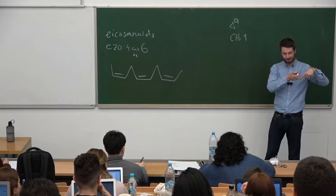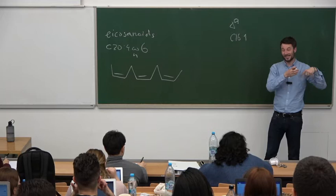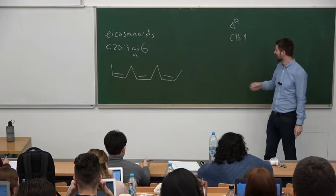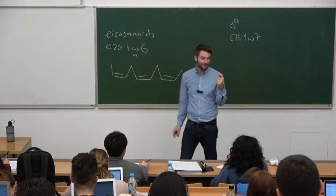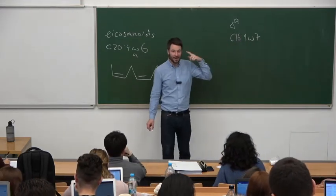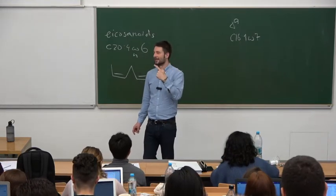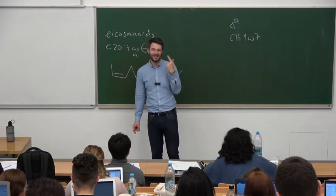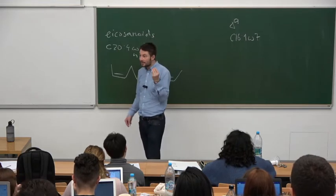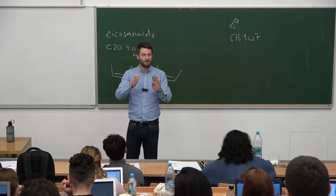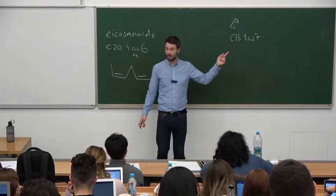This is how we make arachidonic acid. In our tissues and cells, the majority of polyunsaturated fatty acids are arachidonic acid, even though in the diet there is not a huge amount of it. Where in the cells do we have arachidonic acid — where is it stored? In membranes — membranes made of phospholipids. So the majority of polyunsaturated fatty acids in our cells are in phospholipids.